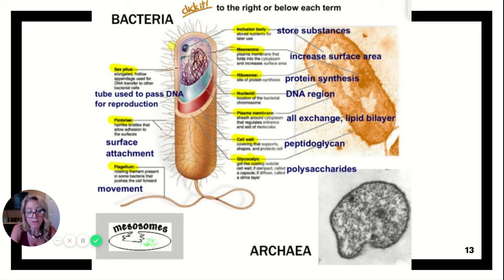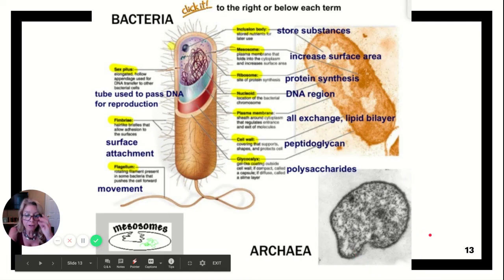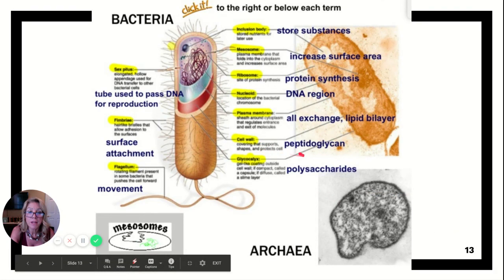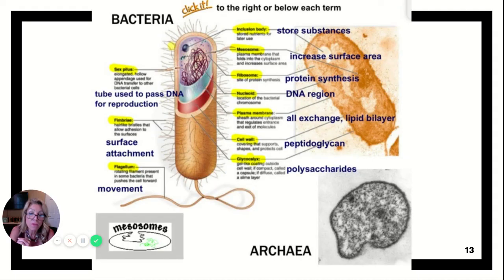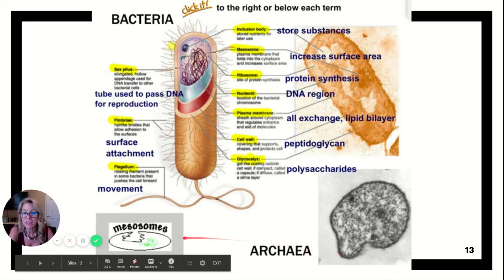Plasmids are small accessory rings of DNA. Ribosomes are the workbench for protein synthesis in all cells. For Archaea — which is newer — some differences: their cell wall is a polysaccharide (rather than peptidoglycan like bacteria), their cell membranes are made with hydrocarbons rather than fatty acids, their DNA and RNA structure is more similar to eukaryotes like us, and many are found in extreme conditions.